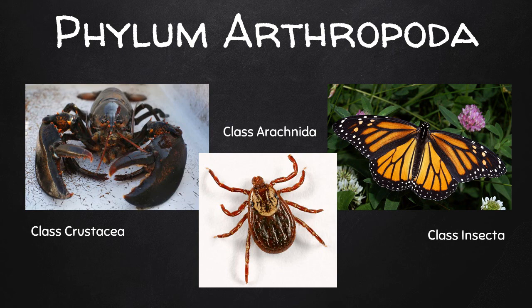Phylum Arthropoda is made up of animals with segmented bodies and jointed appendages. These can be divided into three main classes: lobsters and crabs are in class Crustacea; spiders and ticks are in class Arachnida; and bees and butterflies are in class Insecta.